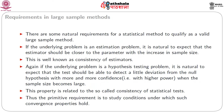There are some natural requirements for a statistical method to qualify as a valid large sample method. If the underlying problem is an estimation problem, it is natural to expect that the estimator should be closer to the parameter with increasing sample size. This is the well-known property of consistency of estimators. If the underlying problem is a hypothesis testing problem, it is natural to expect that the test should be able to detect a small deviation from the null hypothesis with more and more confidence — that is, with higher power. When the sample size becomes large, this property is related to the consistency of statistical tests. Thus, the primitive requirement is to study conditions under which such convergence properties hold.